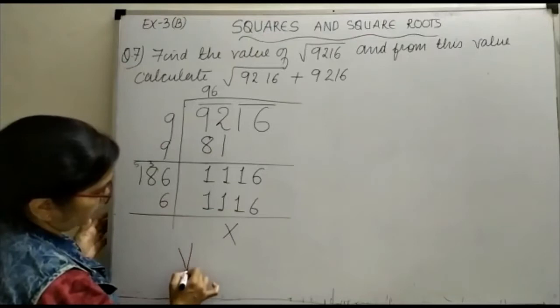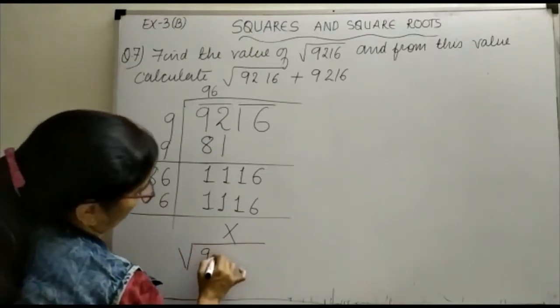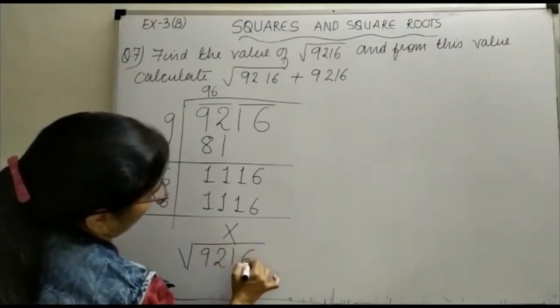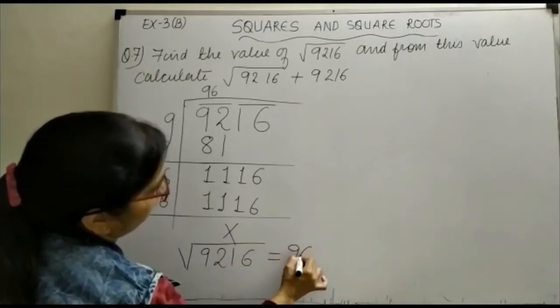So you have understood that √9216 is 96.